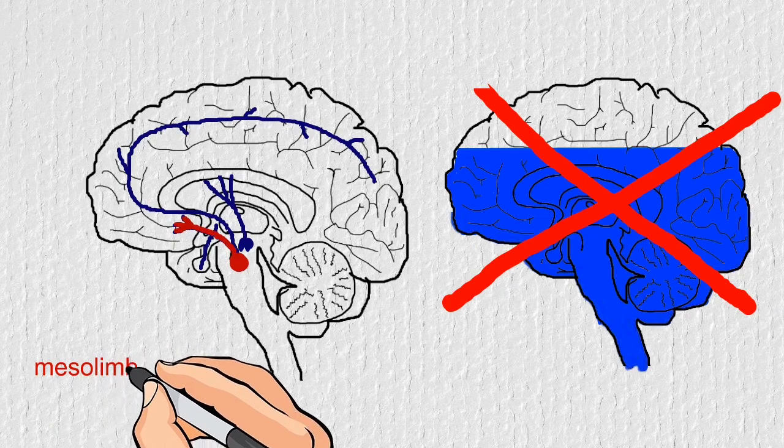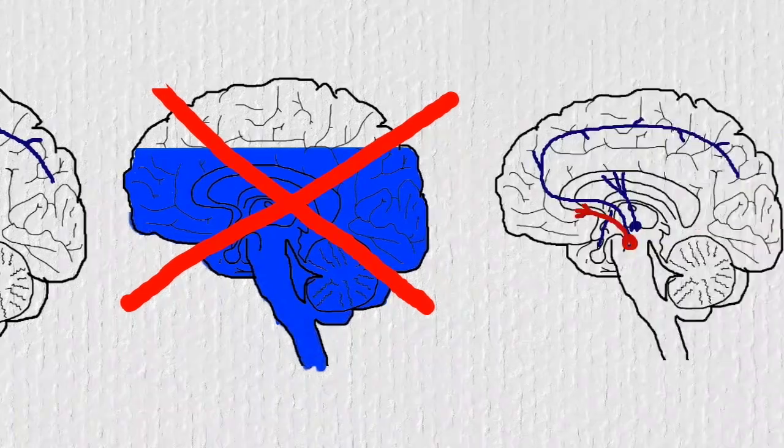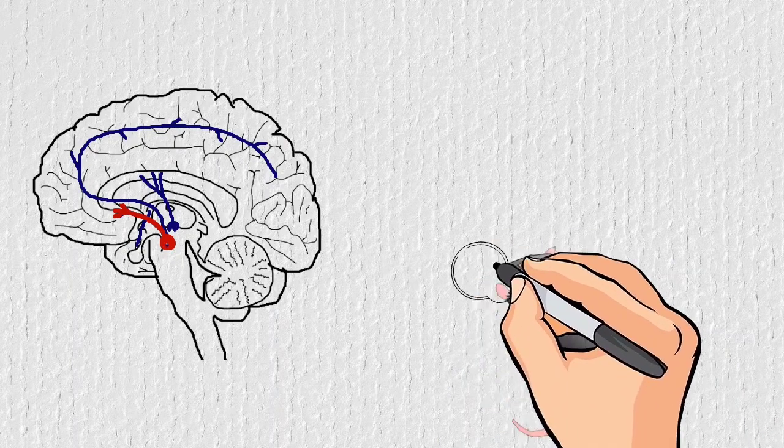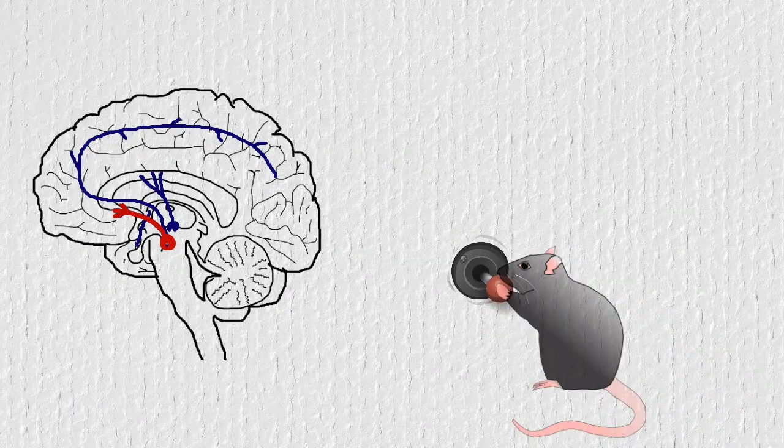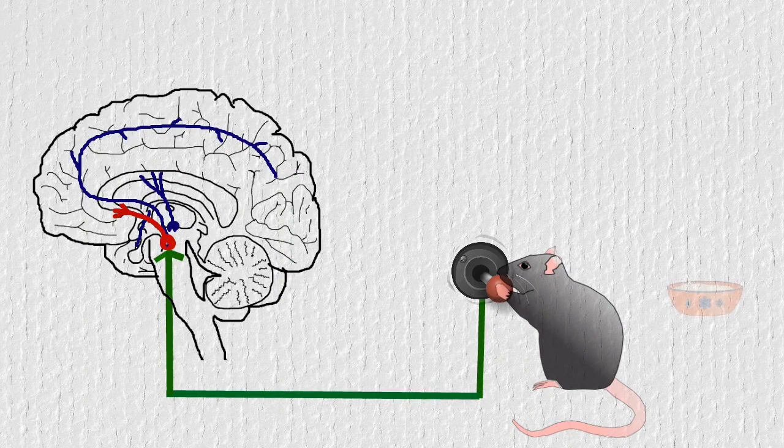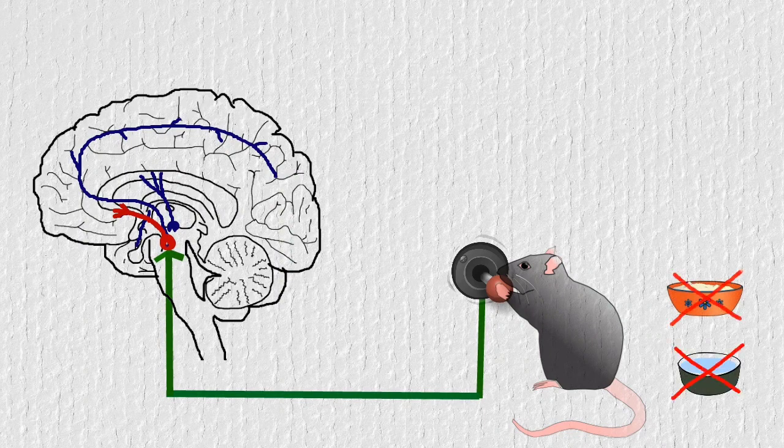The idea of dopamine being a pleasure chemical started decades ago when researchers found that rats would keep pressing a lever that stimulated precisely this pathway. The rats would even ignore food and drinks just to press the lever.